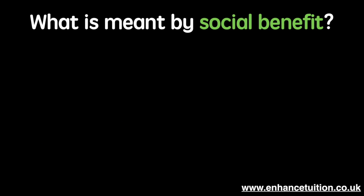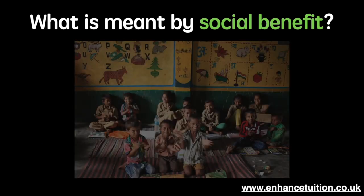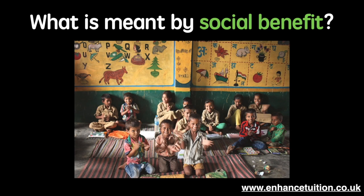Social benefits are equal to private benefits plus external benefits. In the case of education, the private benefits to these children in the image will be the increased opportunities they have in life. Aside from the children, their education can benefit society as a whole.